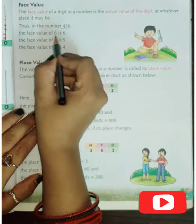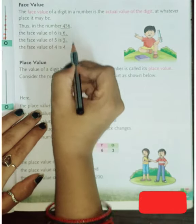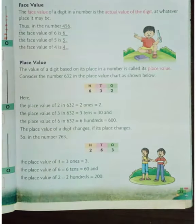For example, if the number is given 456, the face value of six will be six, five will be five, and four will be four. Like this.